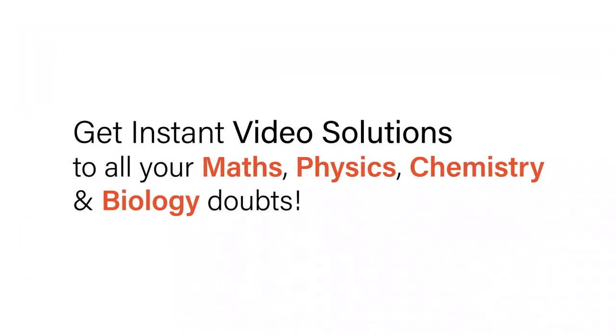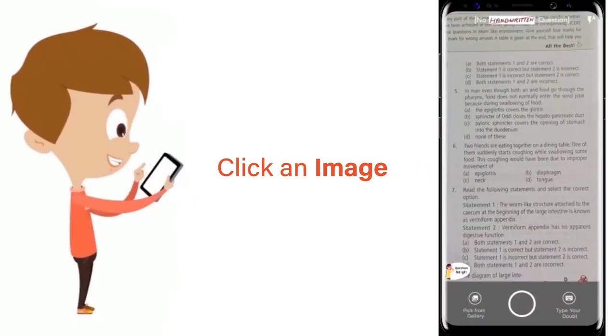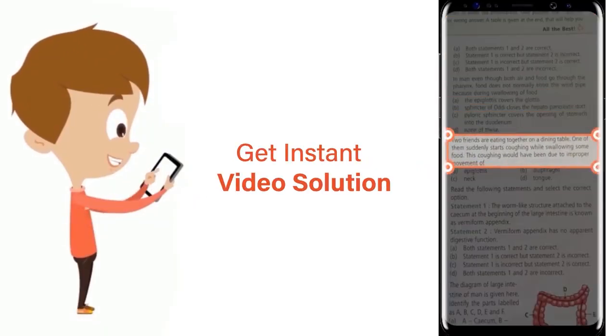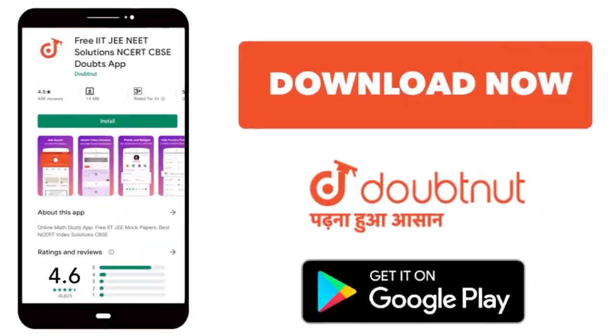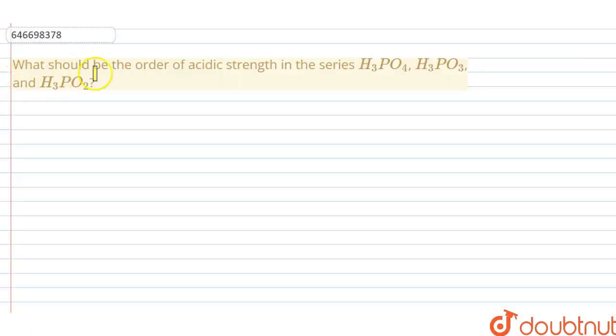With Doubtnet, get instant video solutions to all your math, physics, chemistry, and biology doubts. Just click the image of the question, crop it, and get an instant video solution. Download the Doubtnet app today. Hello students, the question is what should be the order of acidic strength in the series H3PO4, H3PO3, and H3PO2?